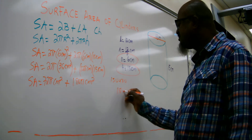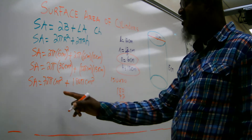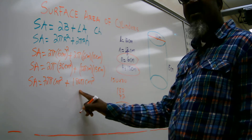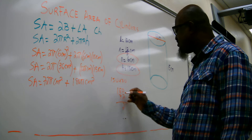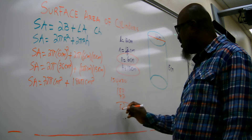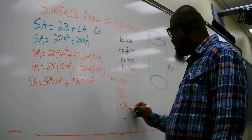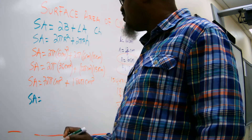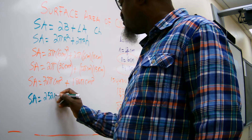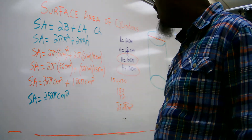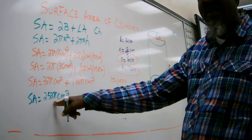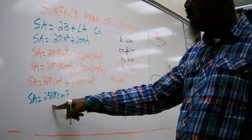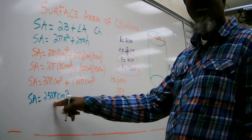We take 180 plus 72, giving 252. So the total surface area is 252π cm². That is the total surface area. Remember we are leaving the answer in terms of pi. Pi could be 3.14 if that's what the problem asks, or pi could be 22 over 7, but the best answer is to leave it as the pi symbol.